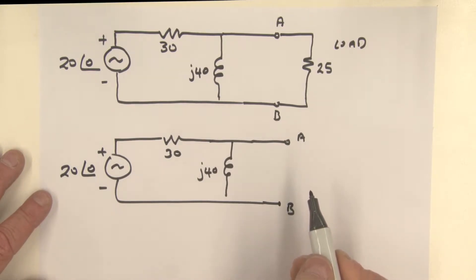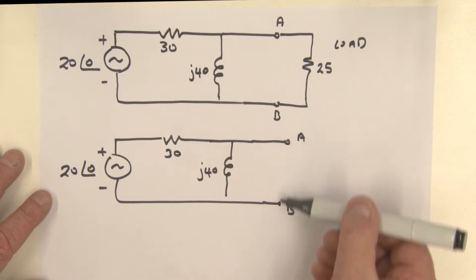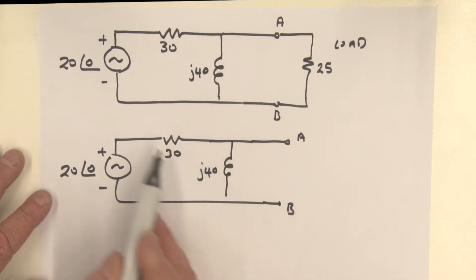The Thevenin voltage is the open circuit voltage, so it's really the voltage I'm measuring at those two terminals with that load gone. So what I've really got here again is a voltage divider. Let's write our Thevenin voltage. Thevenin voltage is equal to this impedance over here. I'm going to express this in polar form, so that's 40 angle 90, divided by the sum of the two, so that's 30 plus J40 in rectangular form, and that's multiplied by my source voltage which is 20 at an angle of zero.